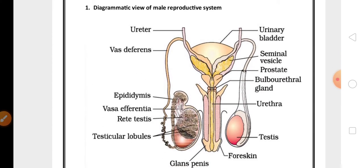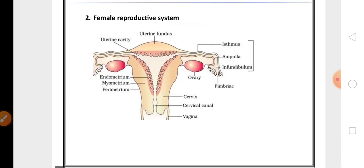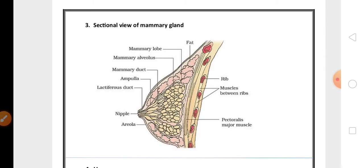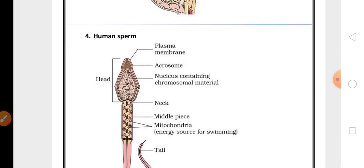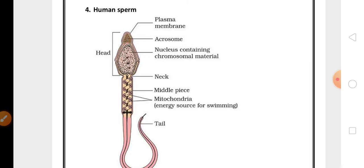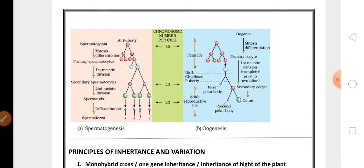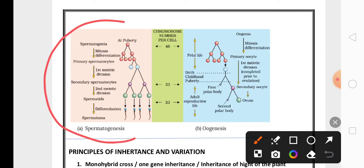Another five marks important question is sectional view of mammary gland. Then human sperm diagram also many times in the exam they have asked for five marks. Then for three marks either they'll ask you to draw the flowchart of spermatogenesis or oogenesis from this chapter.